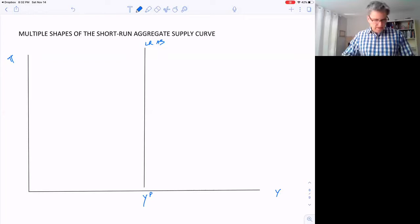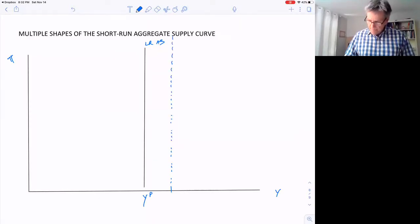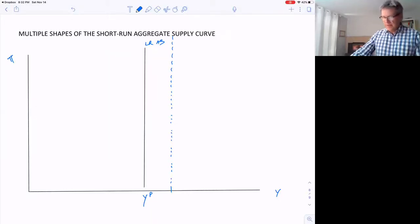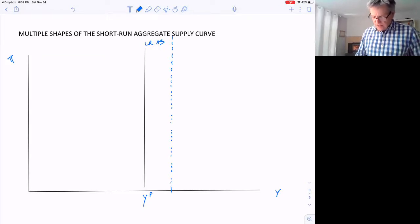So how far can we really go past this potential output? It might be that maybe right here, we run into some sort of wall that we really can't get past. Given our technology and the production function and how many people we have, we just can't produce any more than that. So it's quite possible here that way down here in this early range of output, this aggregate supply curve might be pretty flat.